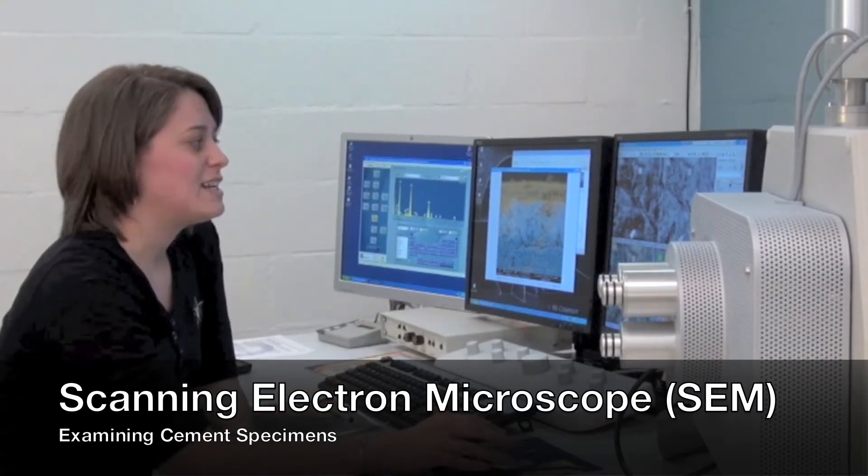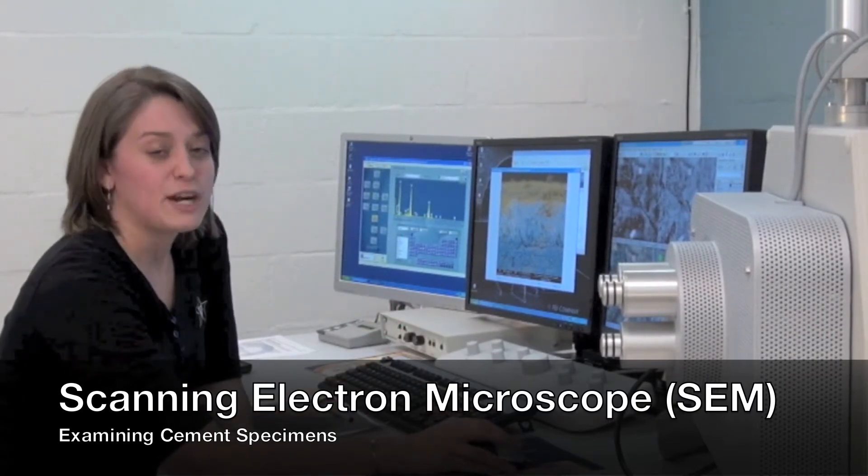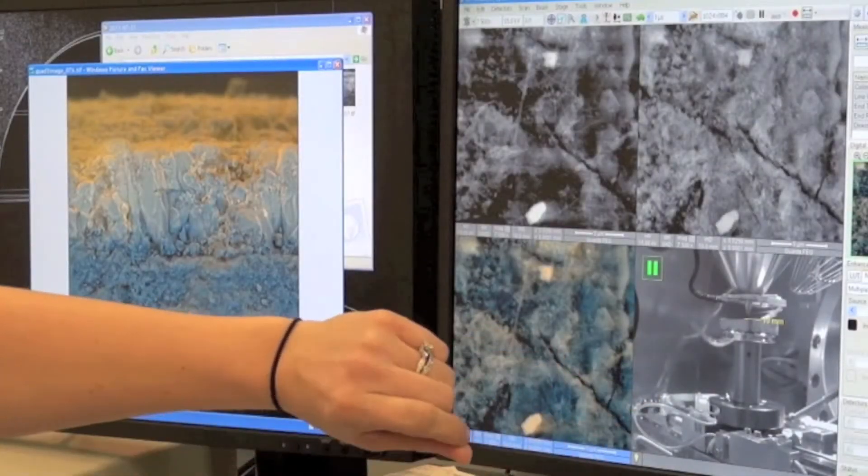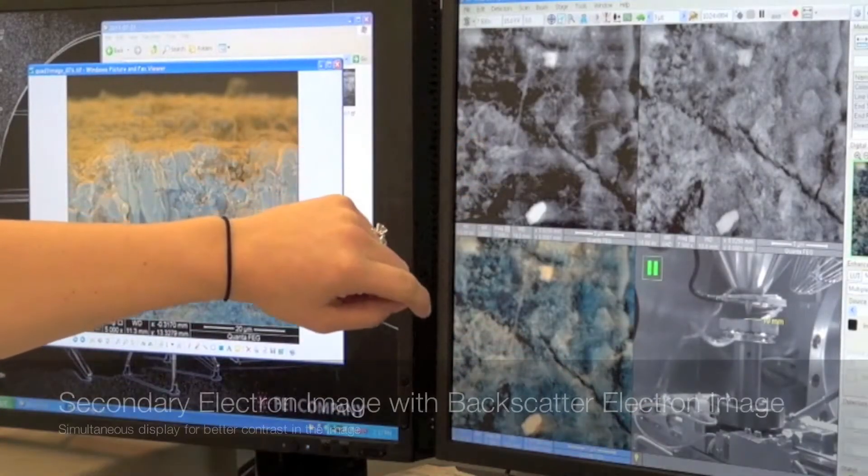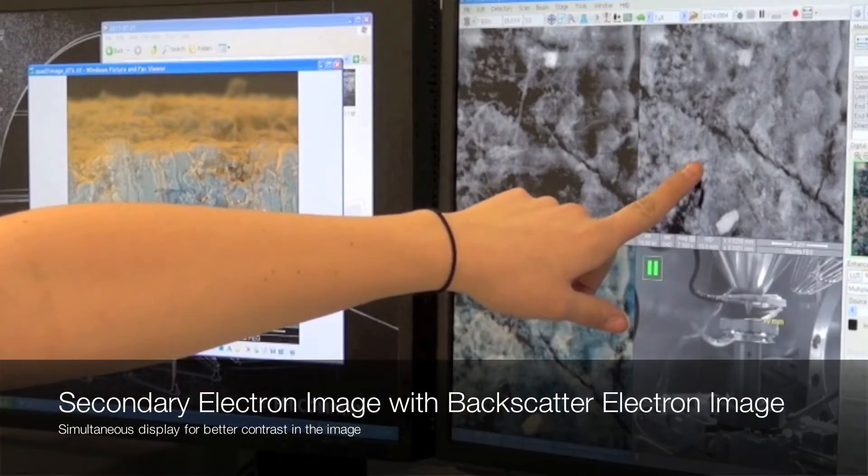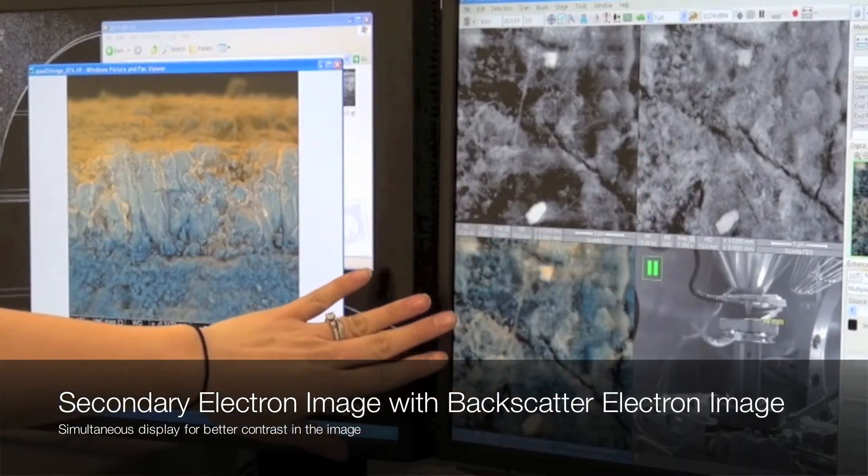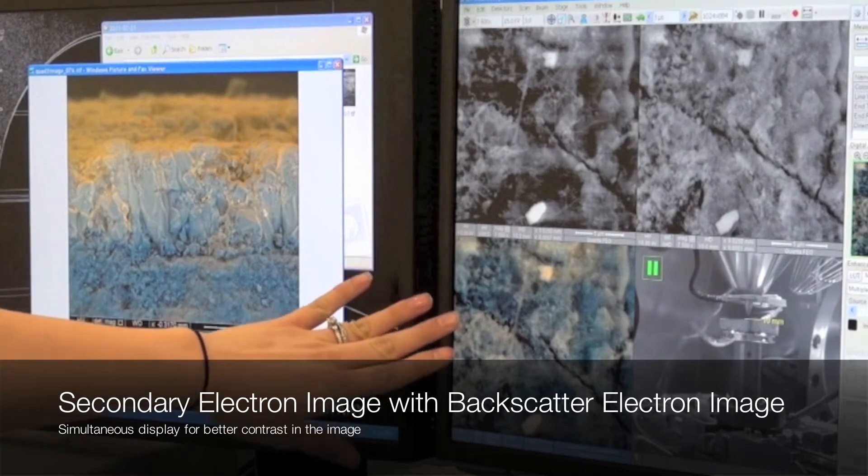After we get the specimen ready, we can pull up a variety of different images with this microscope. Once we get our specimen loaded and ready to go, we can pull up a secondary electron image and simultaneously a backscatter image and a combination of those two in color, which gives us better contrast for our specimen.